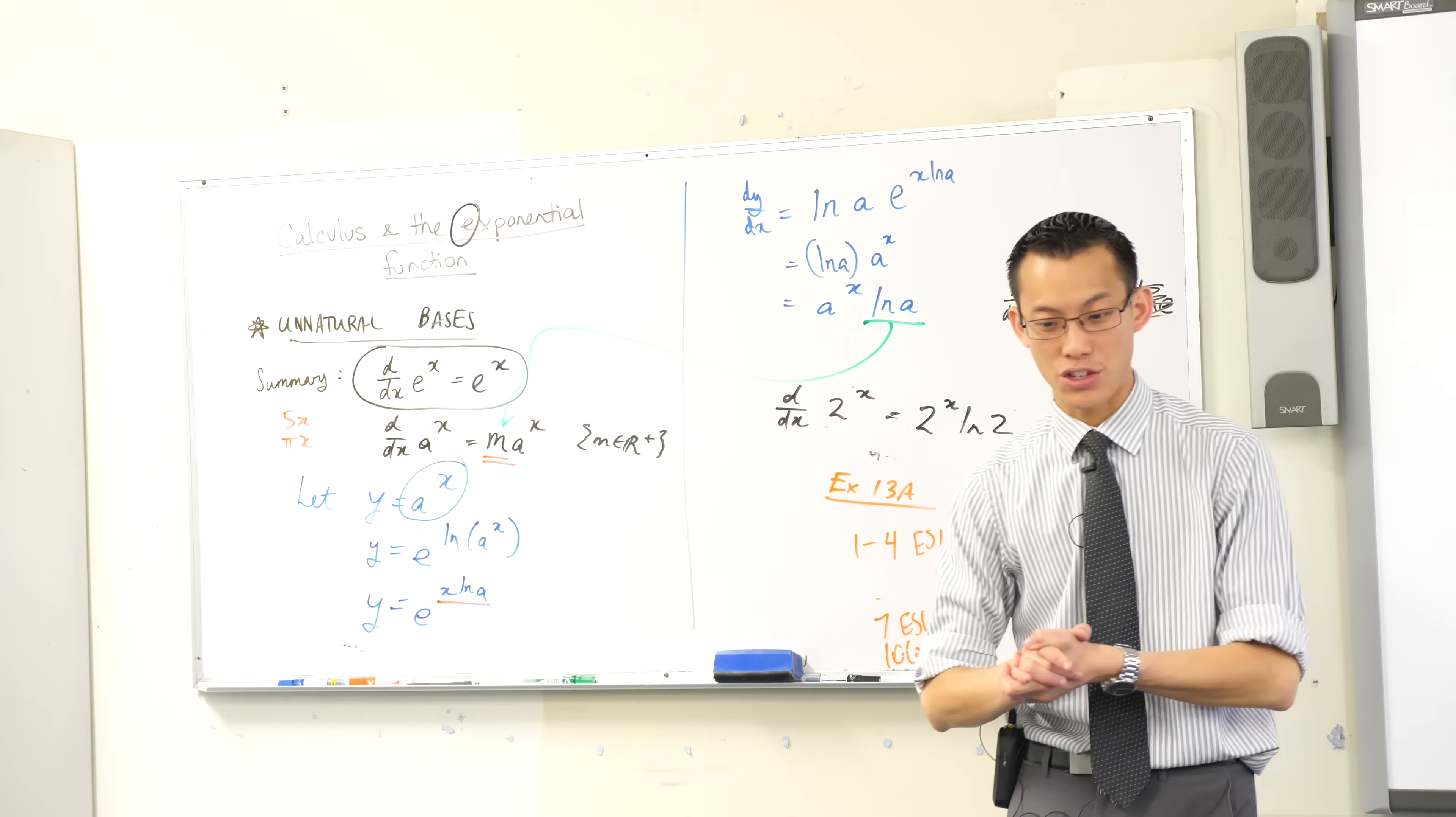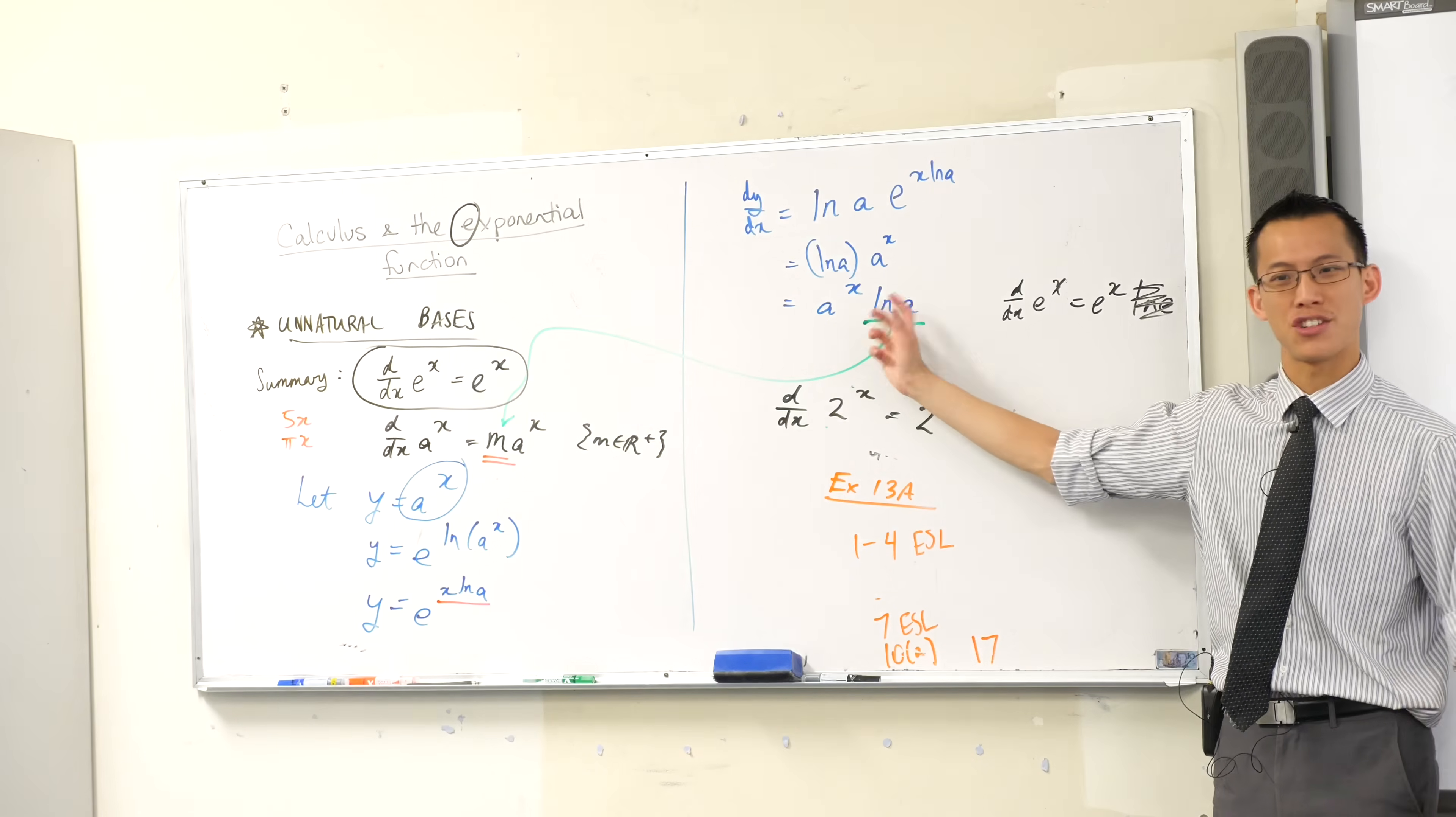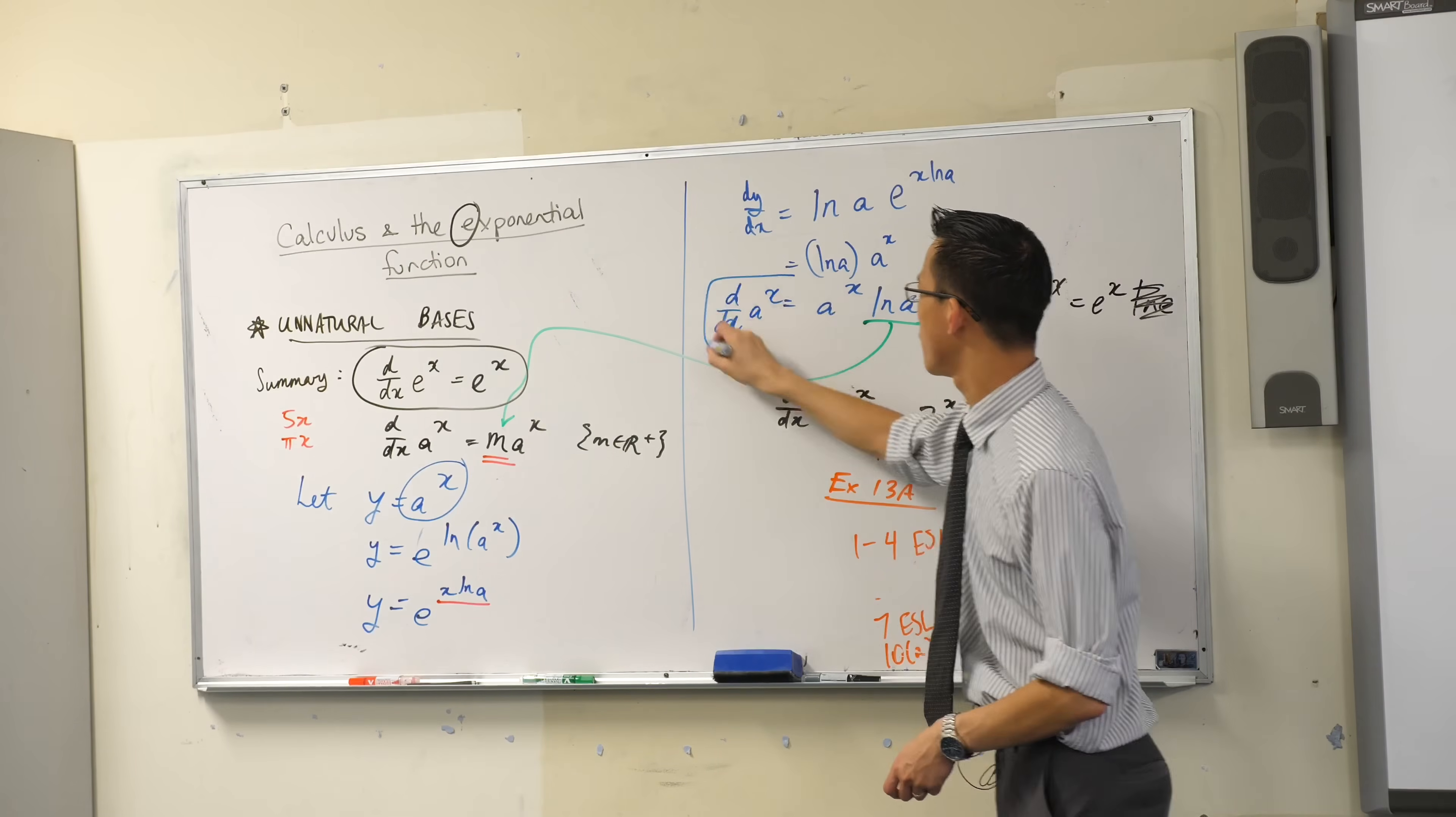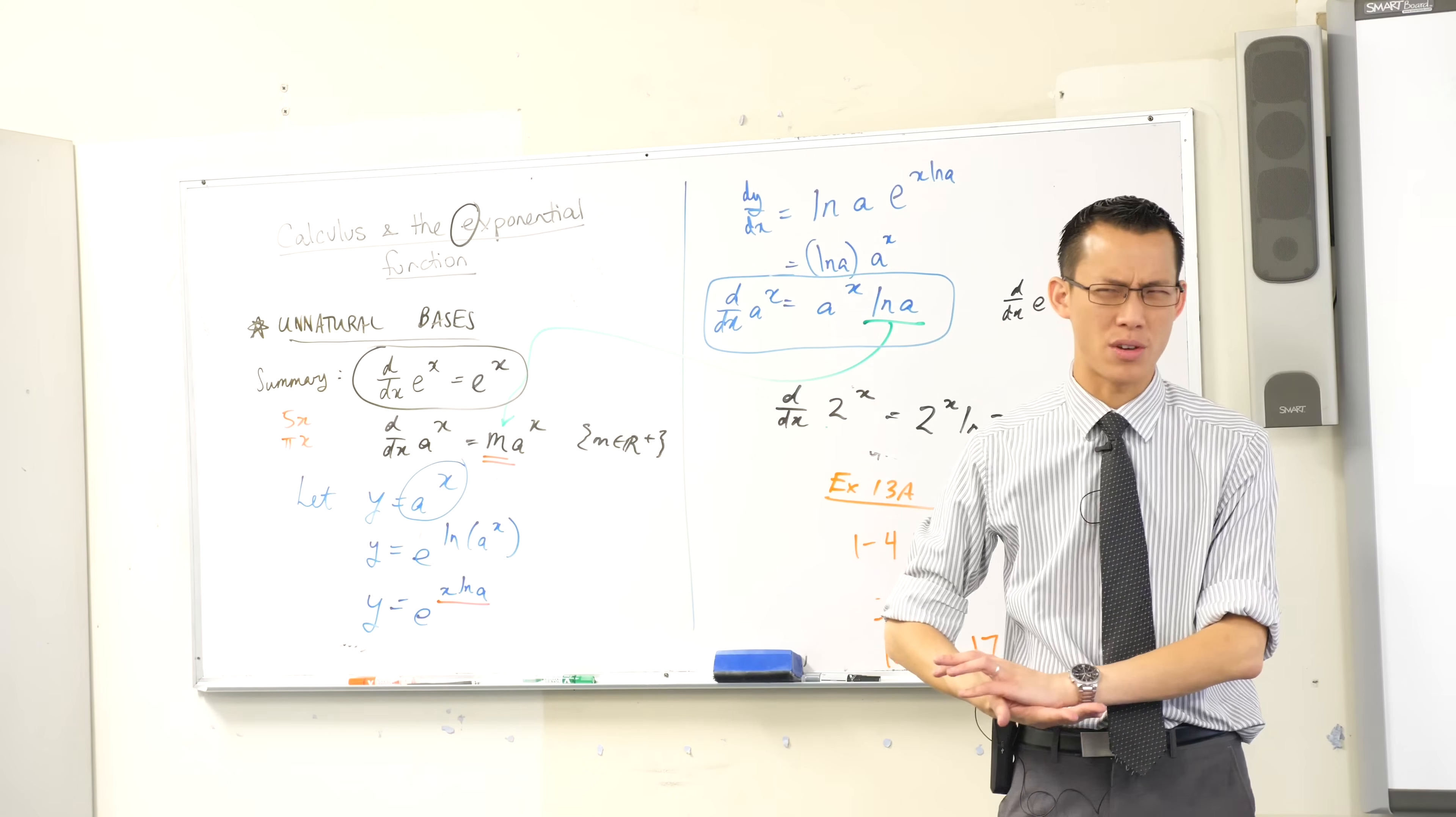So when you have a look at question 7, 7 I think it is, you'll get all these unnatural bases and it's just a slight modification of the rule. But if you want to, you can put a big box around this if you like, because this covers now all of the exponentials you'll ever meet, whether their bases are nice ones or not so nice. Any questions?